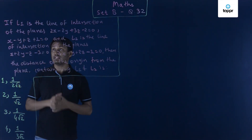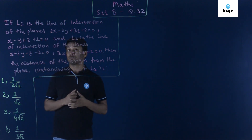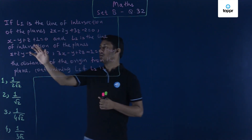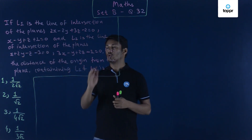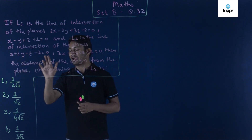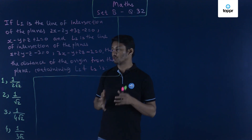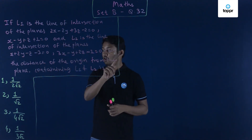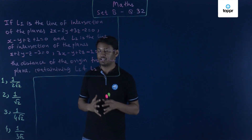Question 32 from set B: L1 is the line of intersection of the planes 2x − 2y + 3z − 2 = 0 and x − y + z + 1 = 0. L2 is the line of intersection of the planes x + 2y − z − 3 = 0 and 3x − y + 2z − 1 = 0. We have to find the distance of the origin from the plane containing both lines L1 and L2.